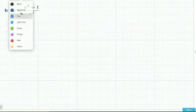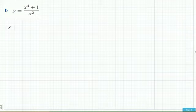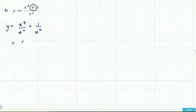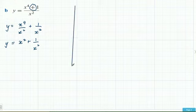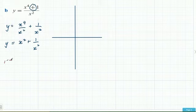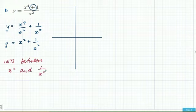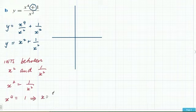For the next example we'll move quickly. This graph has a single denominator, so we split over that denominator: y equals (x²+1)/x², which splits into x²/x² plus 1/x² — that is, 1 plus 1/x². These two graphs are pretty easy to sketch. We find the intersection between x² and 1/x² by setting them equal: x⁴ = 1, which gives x = ±1.